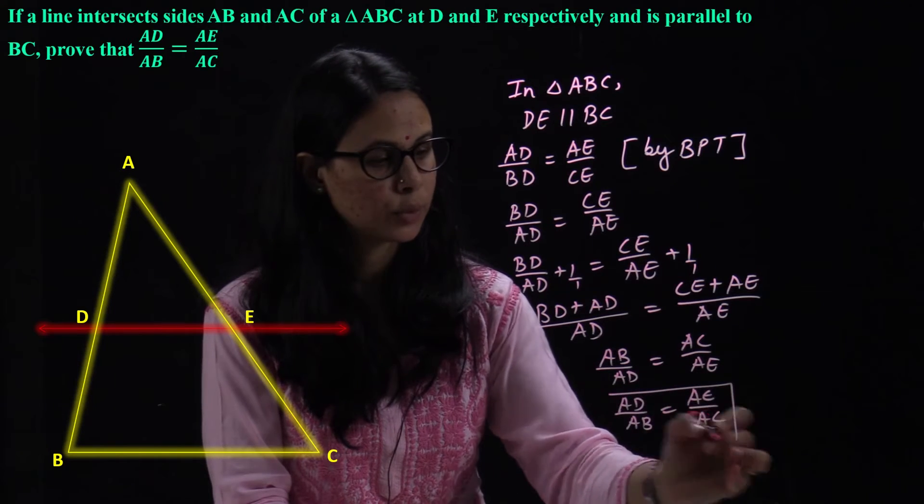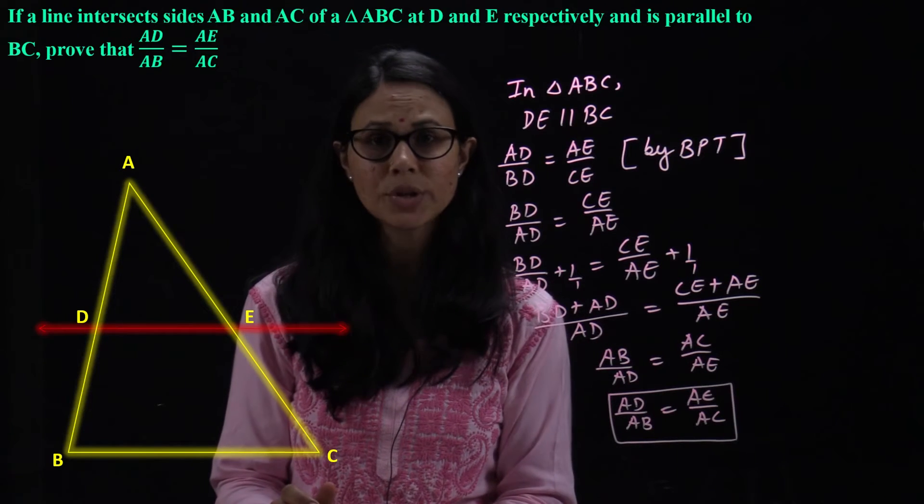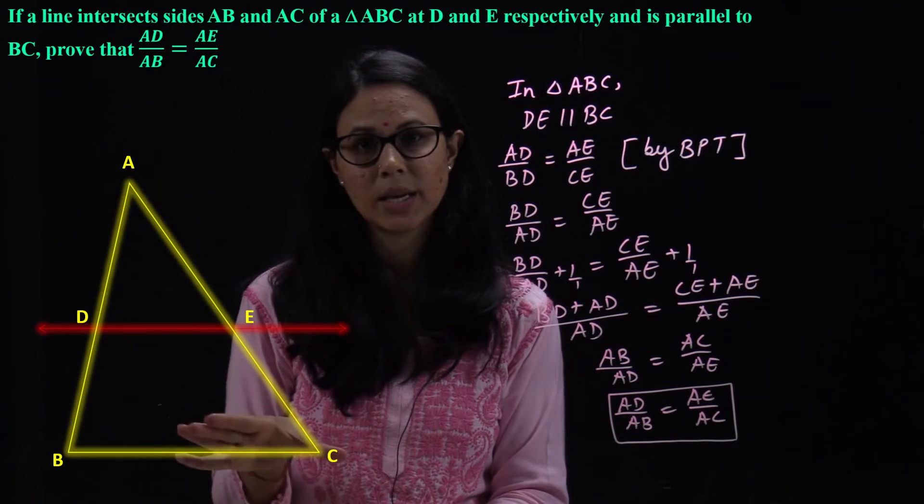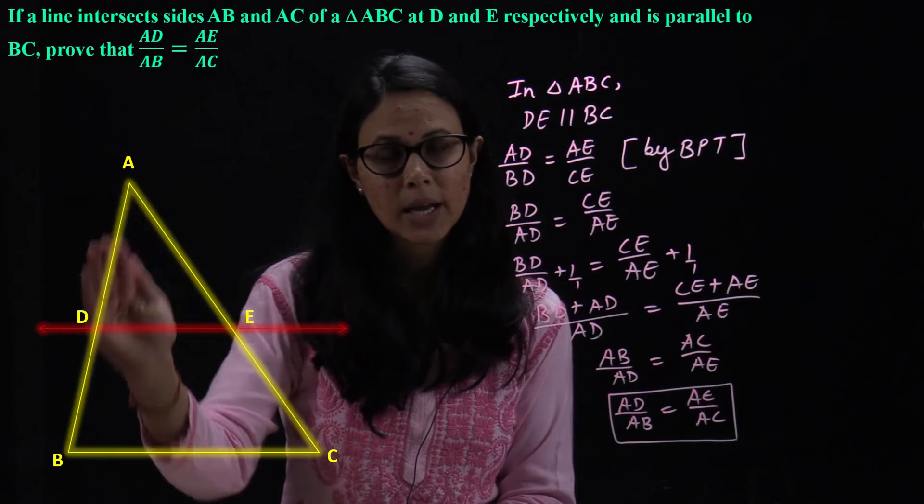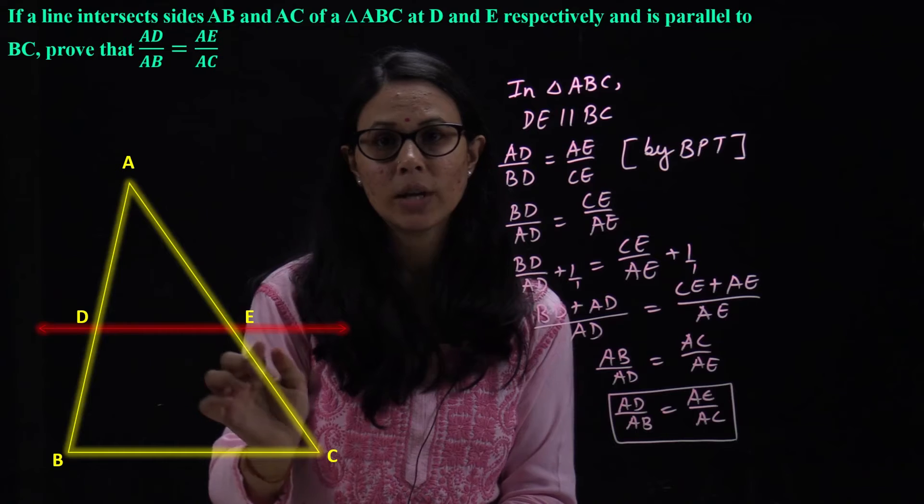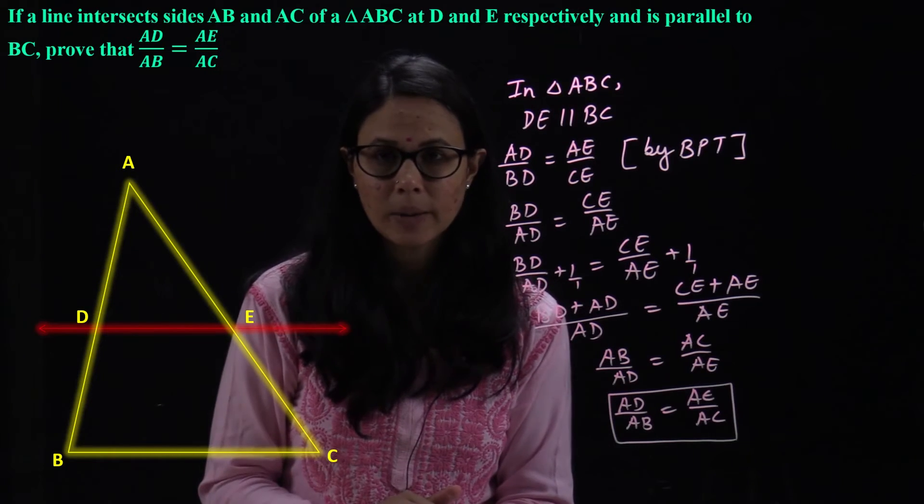This is what we had to prove. Let's review again. First, in the question it is given that there is a triangle ABC. There is a line which cuts the two sides AB and AC of this triangle at D and E points. Also, the DE line is parallel to BC.